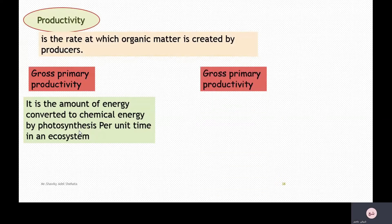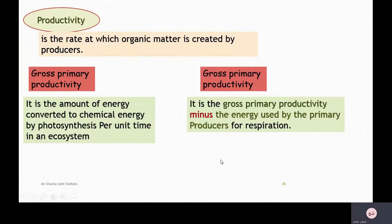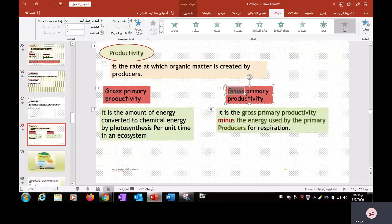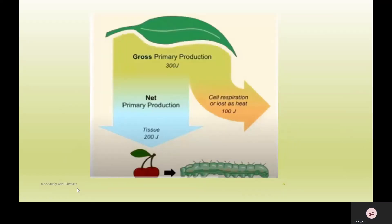Net primary productivity is the gross primary productivity minus the energy used by the primary producers for respiration. For example, as seen in the figure, if the gross primary productivity is 300 joules and the energy used in cell respiration is 100 joules, then the net primary productivity is 200 joules.